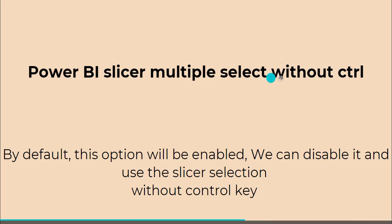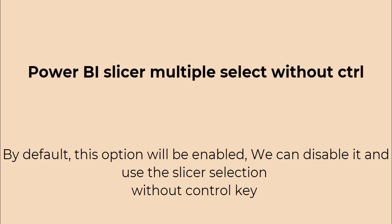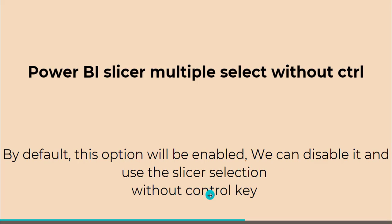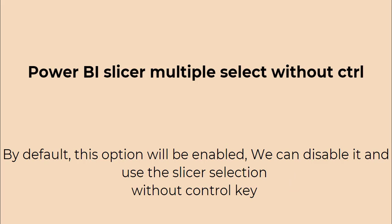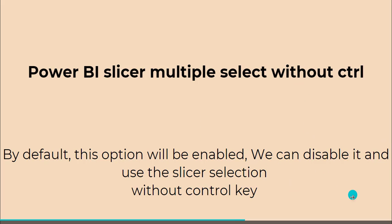Next we will see Power BI slicer multiple select without control. As we already saw, by default the multiple selection with control option is enabled. So to disable it, we have to go to the Slicer Settings Selection and disable this option. Then we can use the slicer visual with multiple selection without pressing the Control key on our keyboard.